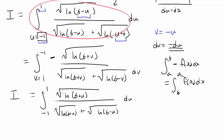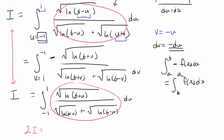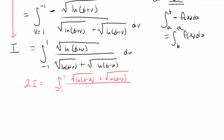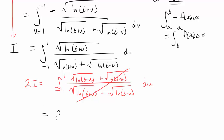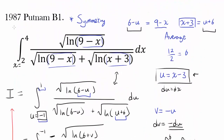When we add up the two expressions, we get 2i. Adding the two integrals gives the integral from negative 1 to 1 of: square root of natural log of (6 minus u) plus square root of natural log of (6 plus u), all divided by square root of natural log of (6 plus u) plus square root of natural log of (6 minus u), du. These cancel to become 1, and the integral of 1 from negative 1 to 1 is simply 2. So 2i equals 2, and the value of our integral i is simply 1.